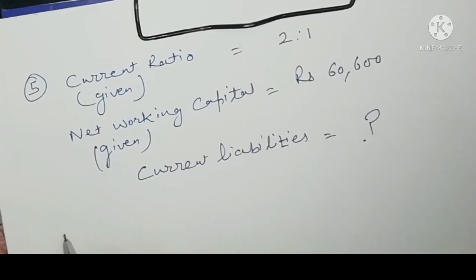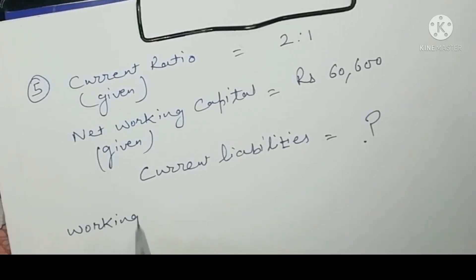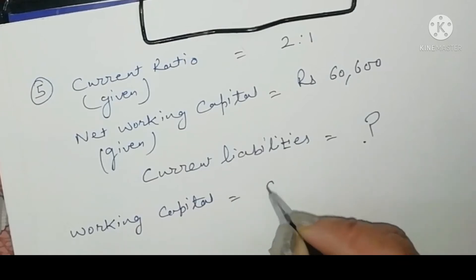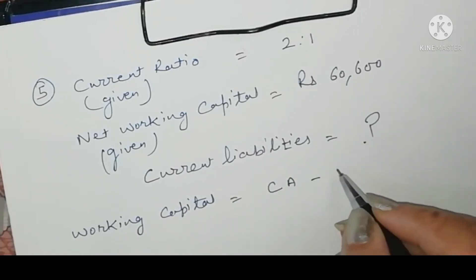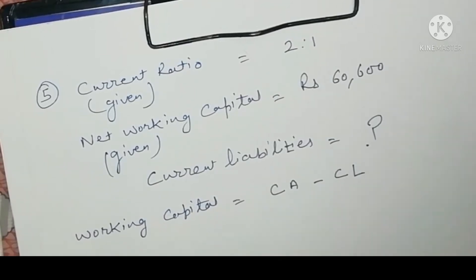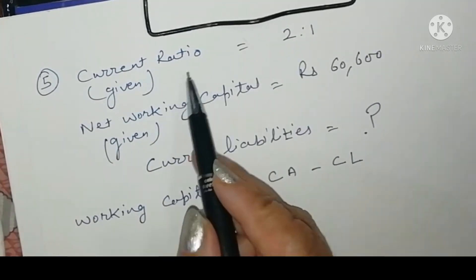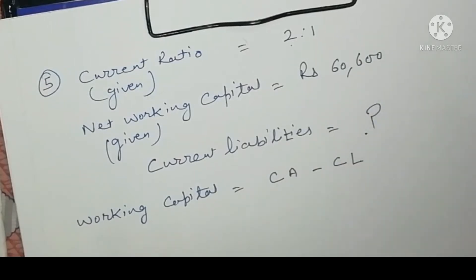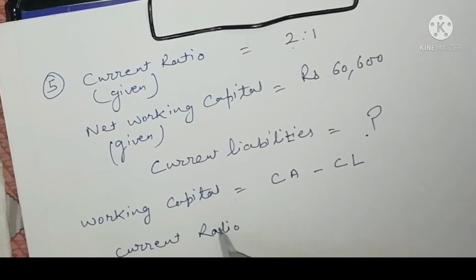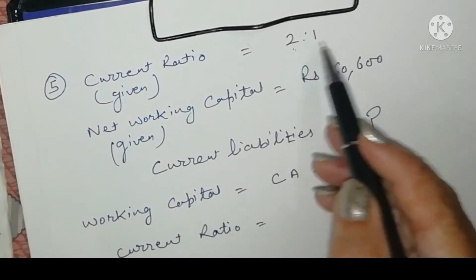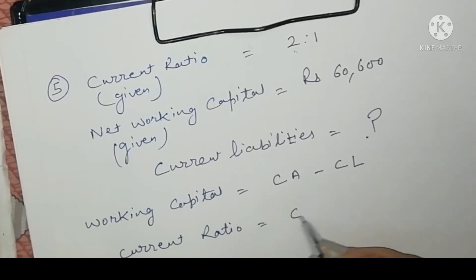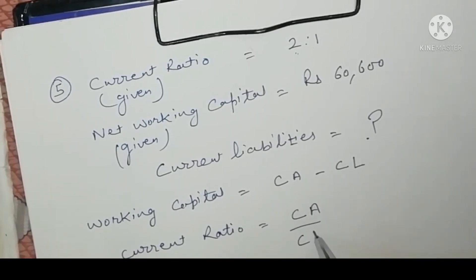As you know, working capital is equal to current assets minus current liabilities. The formula of current ratio is CA upon CL, and the current ratio value is also given in the question, that is 2:1. So CA upon CL equals 2:1.